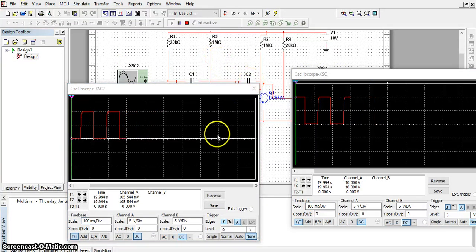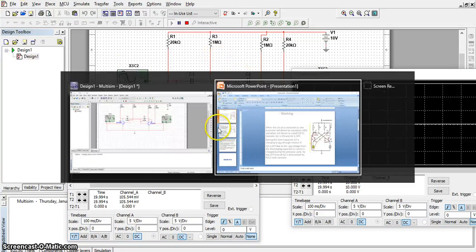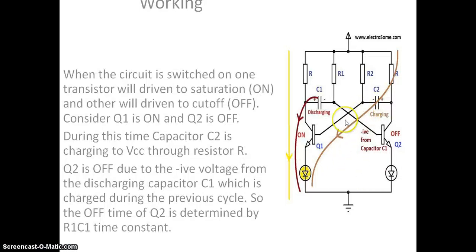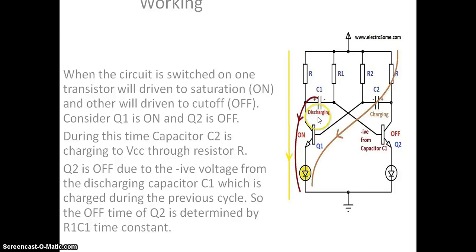Now, how does this circuit work? We have a PPT for this. When the circuit is switched on, Q1 and Q2 operate such that Q1 is on and Q2 is off. Q2 is off due to negative voltage from the discharging capacitor C1.